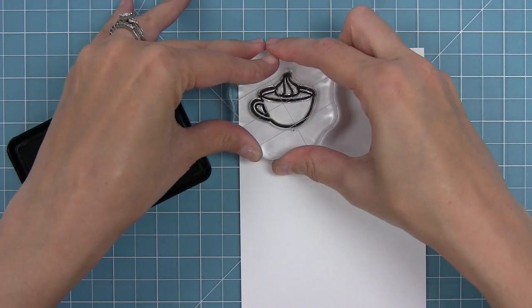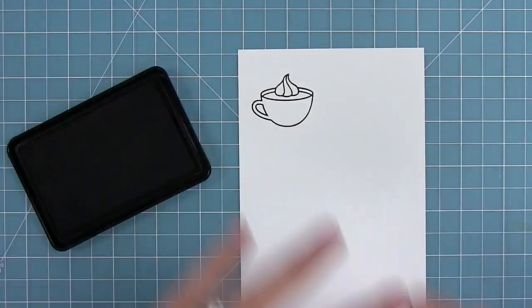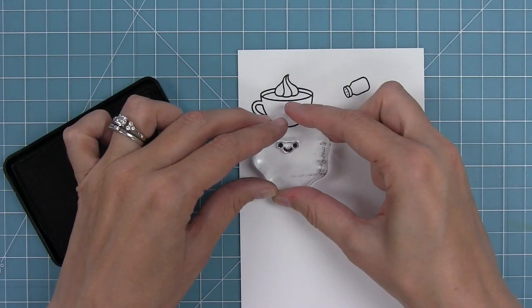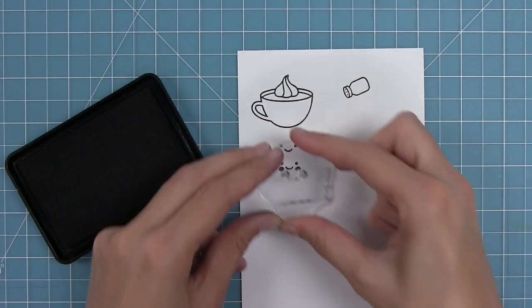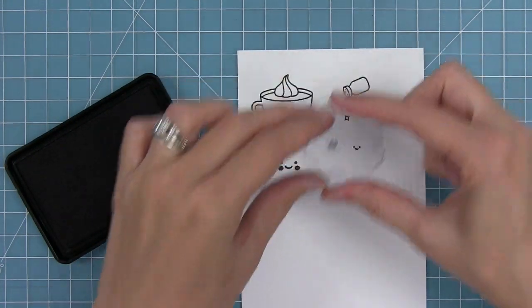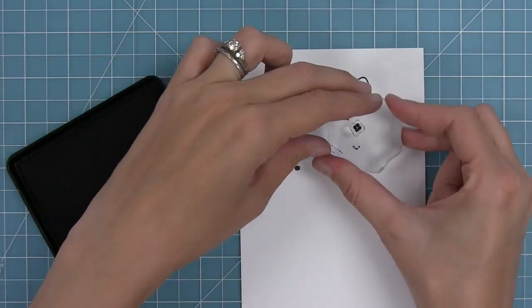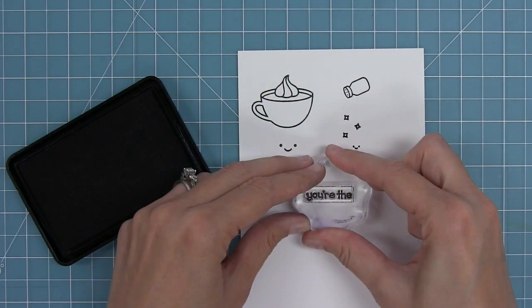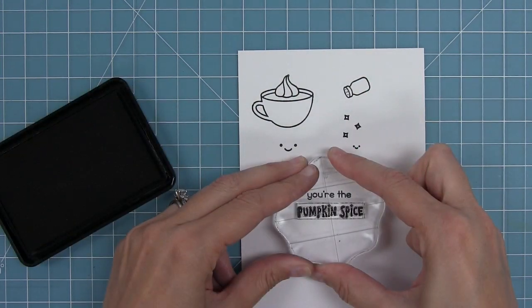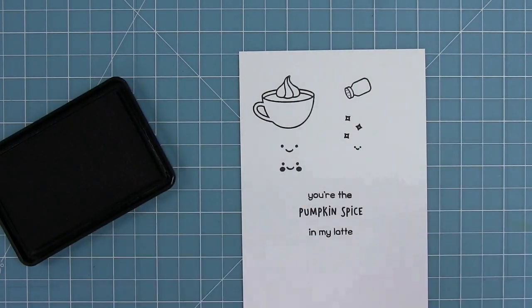First up we have this cute little coffee cup, it also could be a hot chocolate mug too, and then we've got a little shaker and we have smiley faces for both the cup and the shaker, and little blush cheeks for that cup too. We also have these little diamond shapes that can be the sprinkles coming out of that little shaker. Then we have the sentiment which is so adorable and that's the you're the pumpkin spice in my latte.